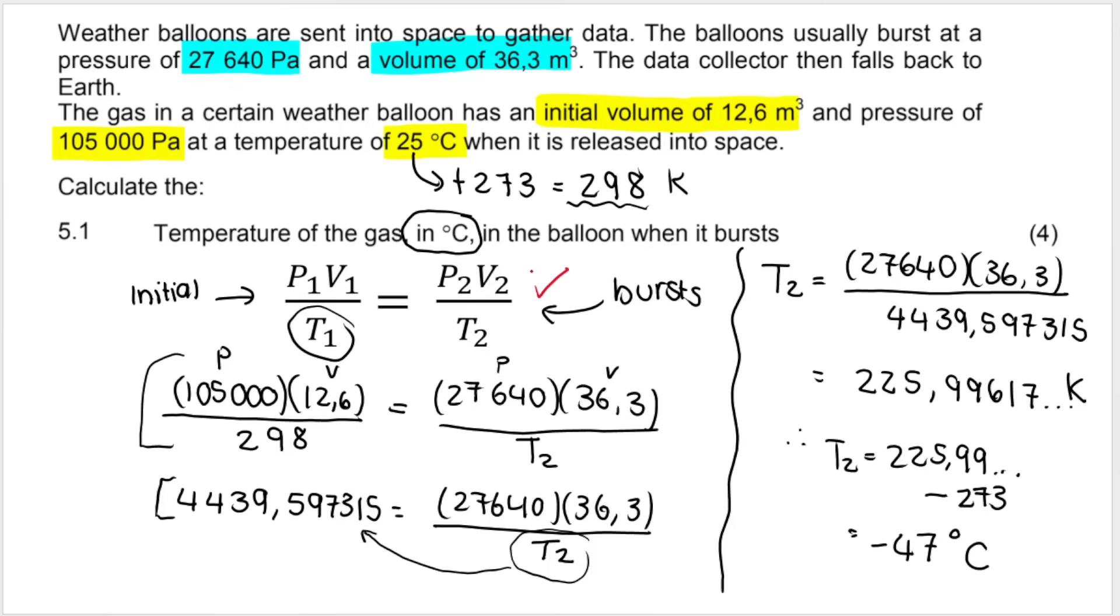So this is four marks. You get a mark for your formula always. You get substitution marks for either side of the equation. And you get a final answer mark. So if you forget to convert back to degrees Celsius, you do not get your final answer mark. You need to read the question carefully.